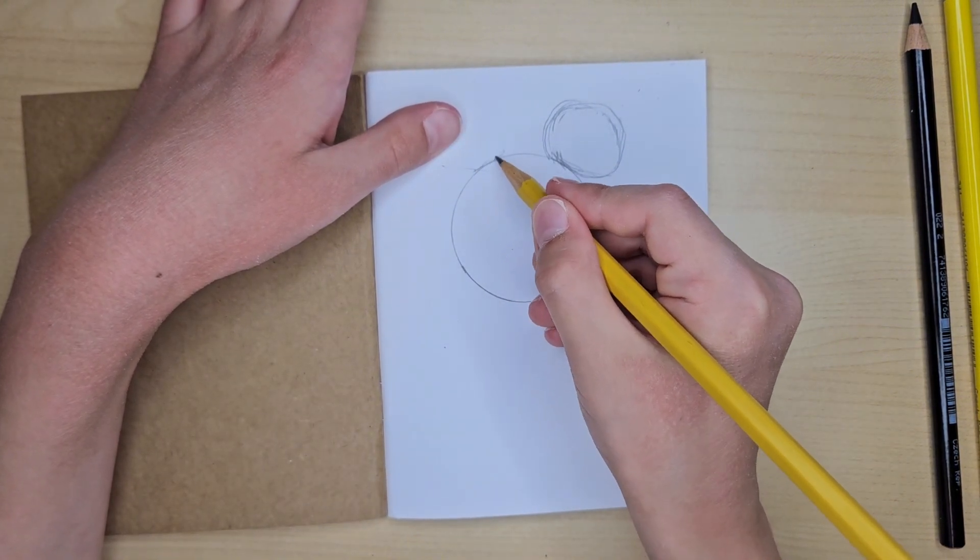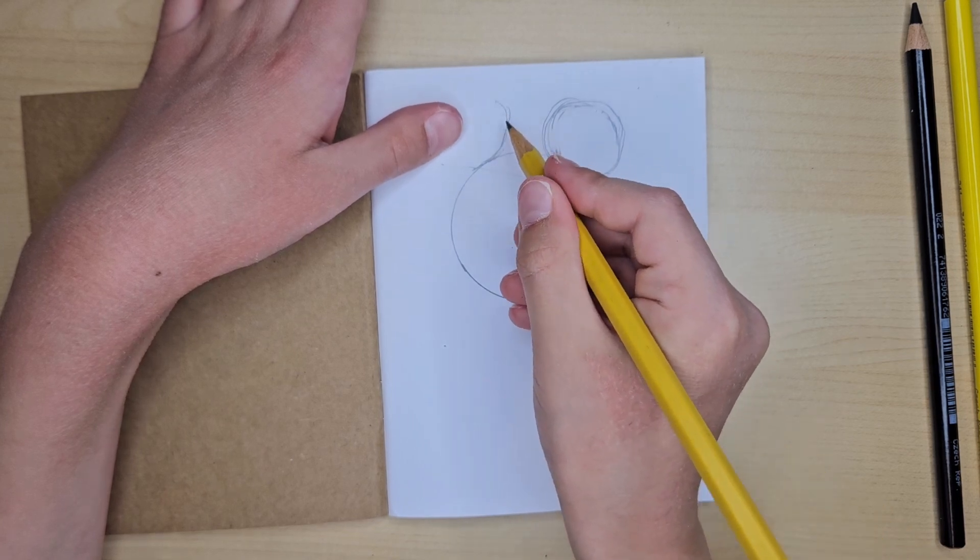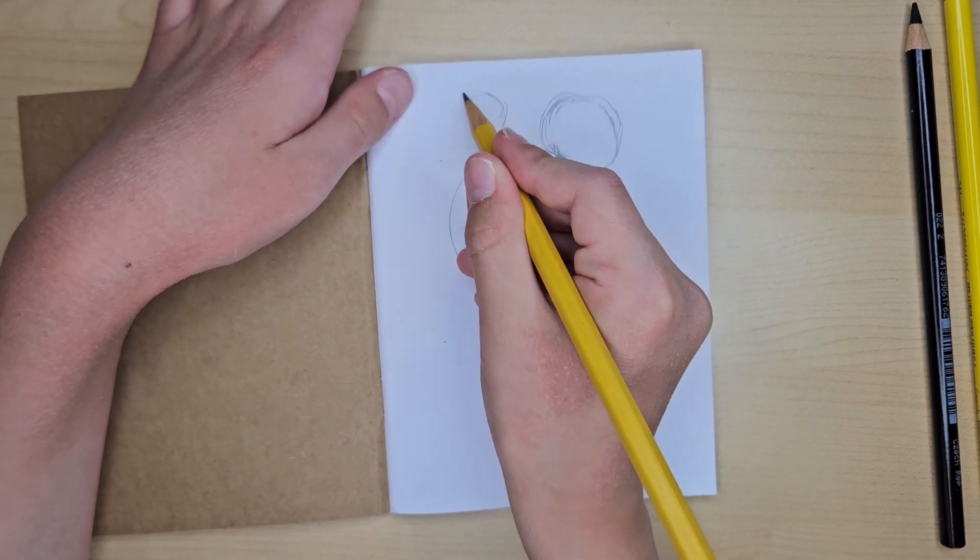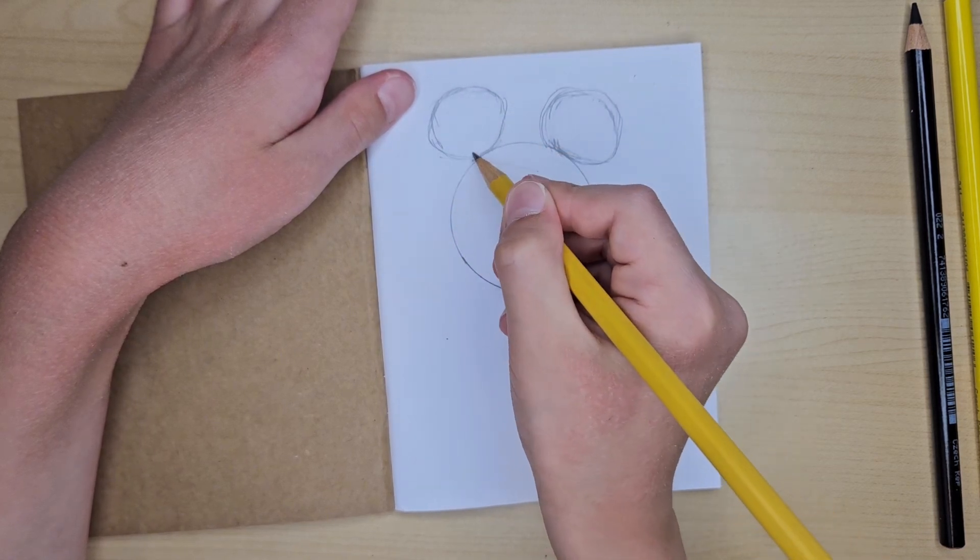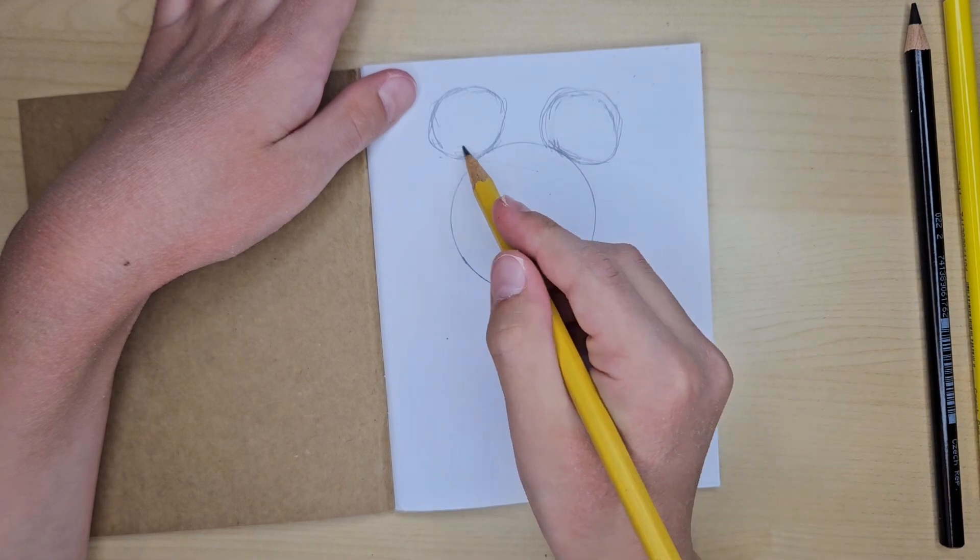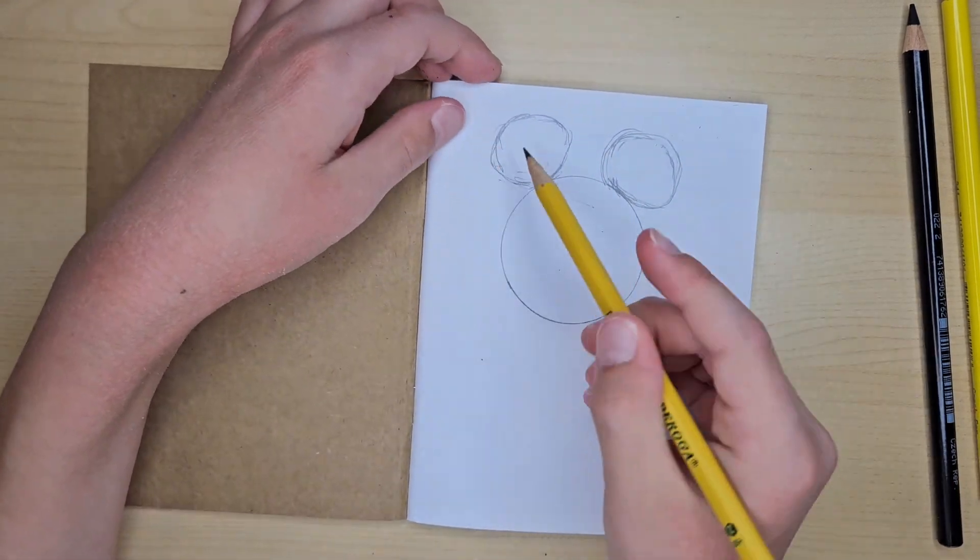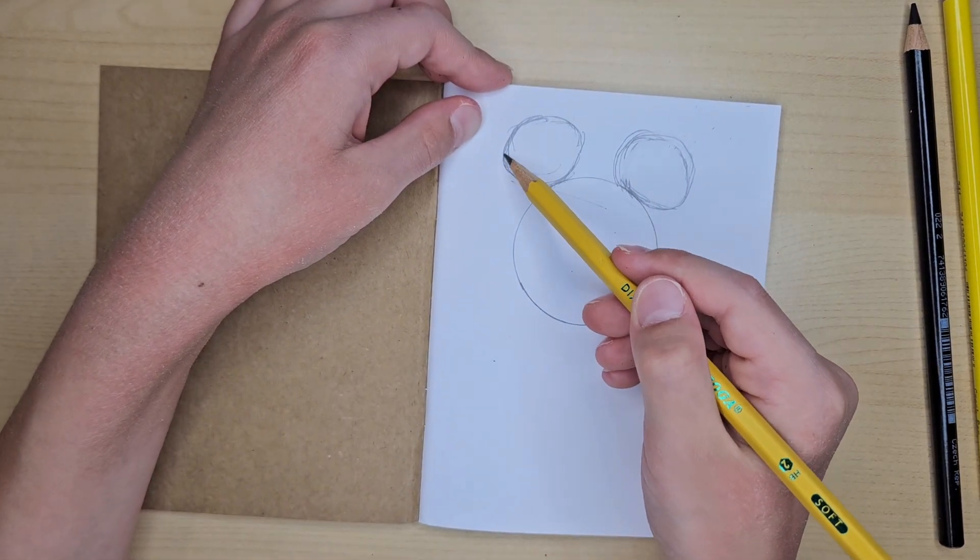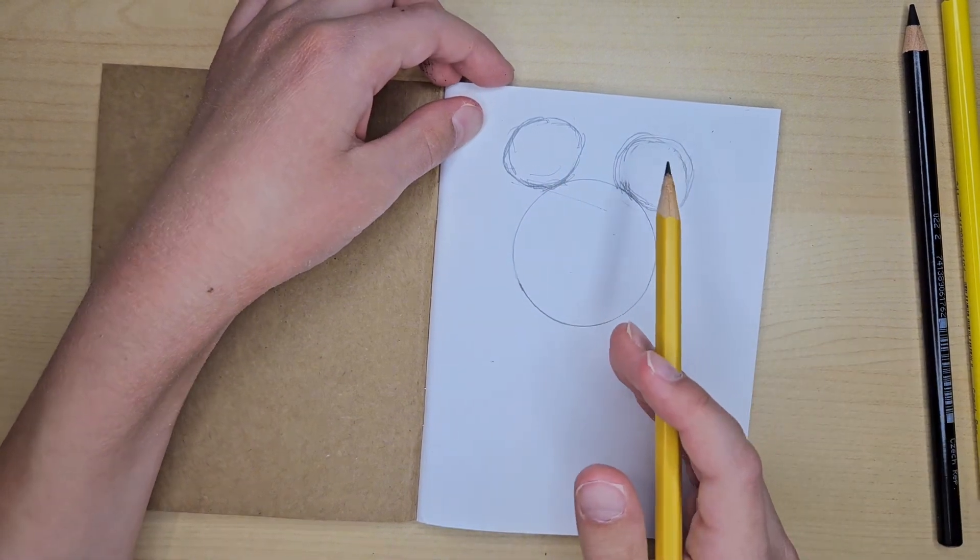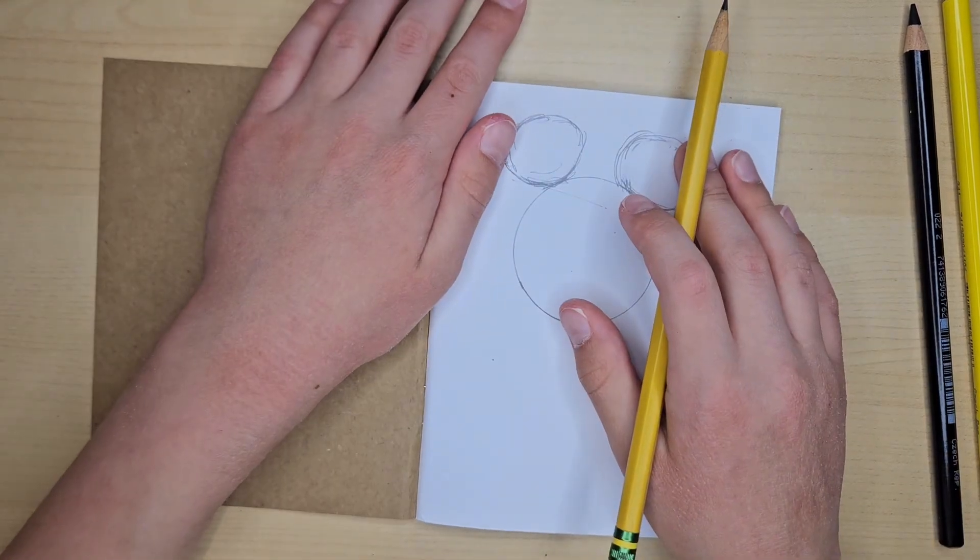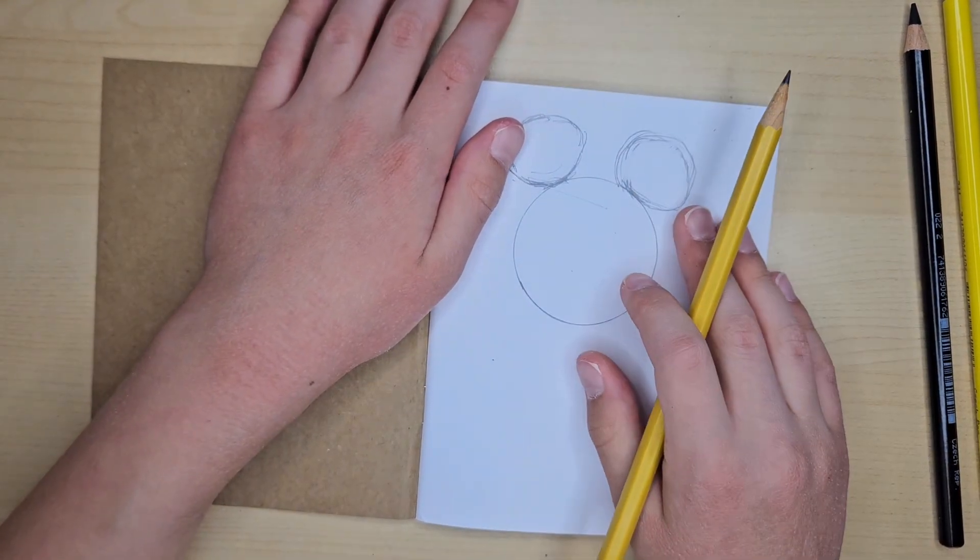There's one ear. We will erase the insides later on. Now time to do the other ear. We have to draw the same shape on the other side. So it kind of looks like this. We got like a little Mickey shape head here, the D's being the ears.